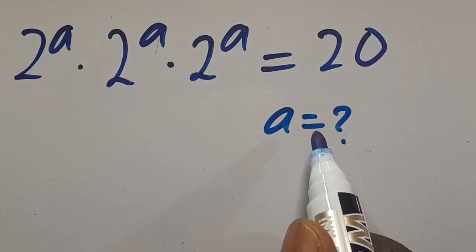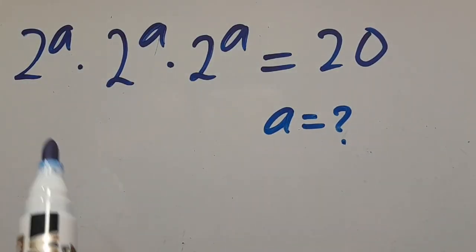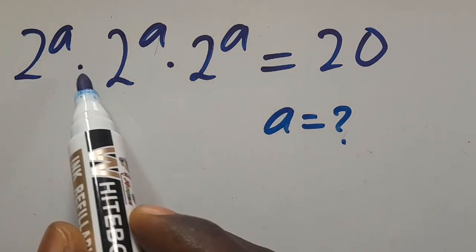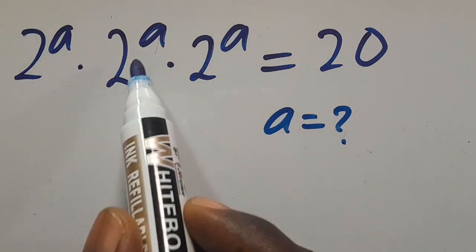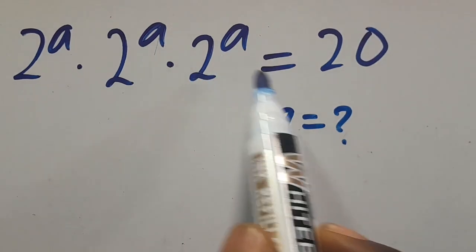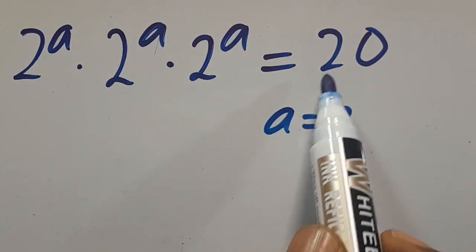Hi, what is the value of A given that 2 to the power of A multiplied by 2 to the power of A multiplied by 2 to the power of A equals 20?